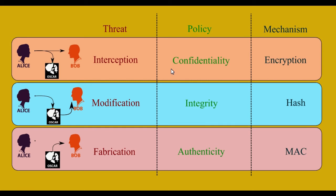For confidentiality, we use encryption techniques like AES, DES, and so on. Encryption converts the message into a certain format so that it cannot be revealed by a third party who does not have the correct key. Even if they have the encrypted message and the algorithm, without the correct key they will not be able to decrypt the message.